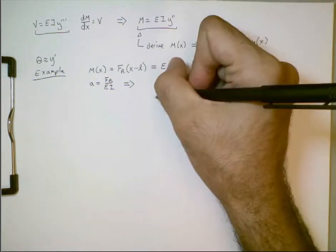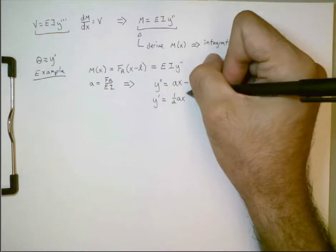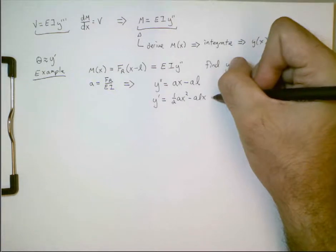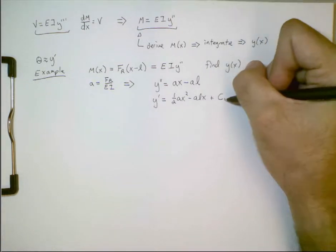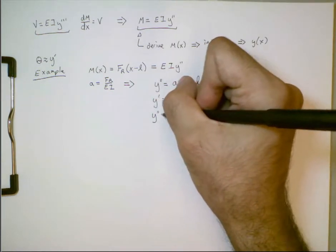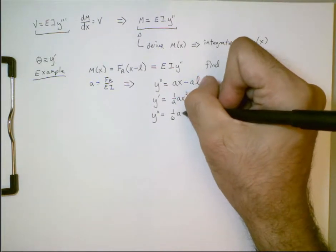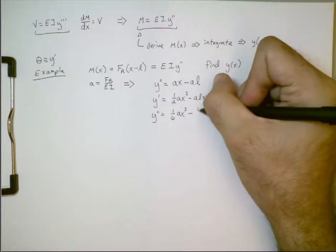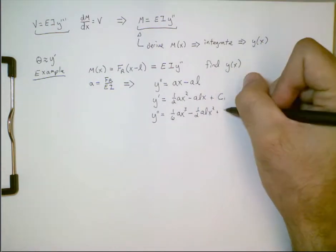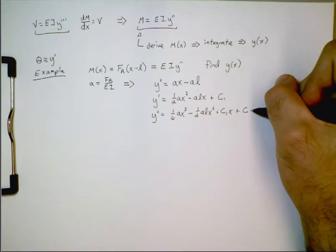If we integrate once, we get one half ax squared minus alx plus a constant of integration. If we integrate a second time, then we'll get one sixth ax to the power of 3 minus one half alx squared plus c1x plus a second constant of integration.